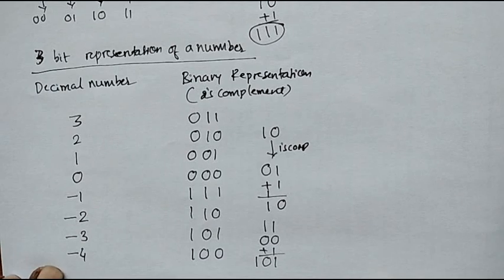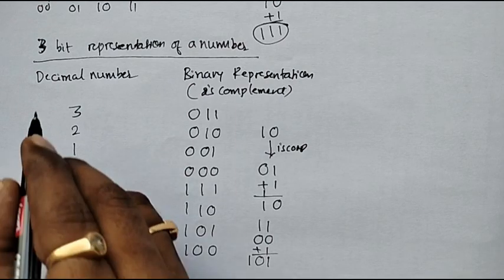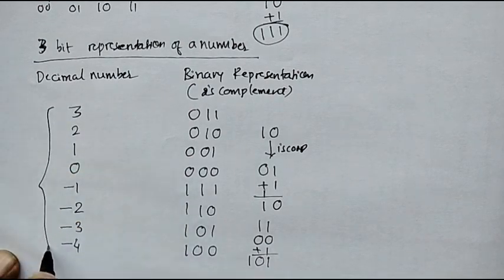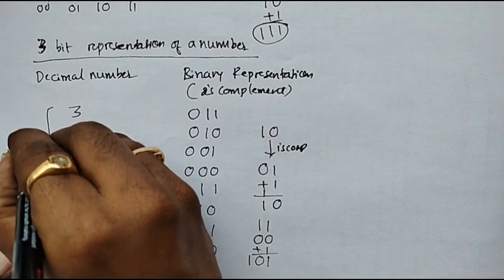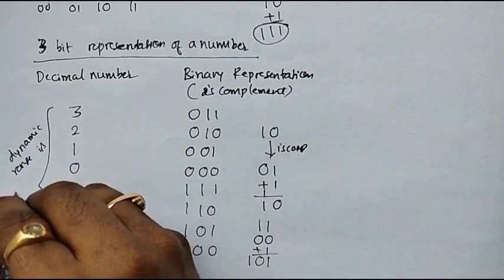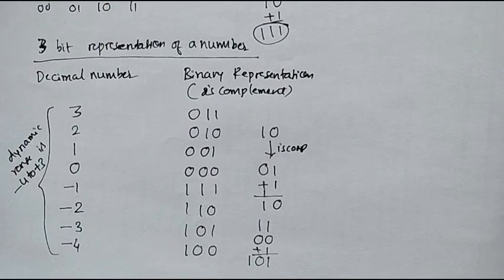Now, looking at the dynamic range of these numbers, the dynamic range varies from minus 4 to plus 3. The basic digital signal processor operations include multiplication and addition. Sometimes the result of multiplication or addition causes overflow problems. Let us understand with an example.